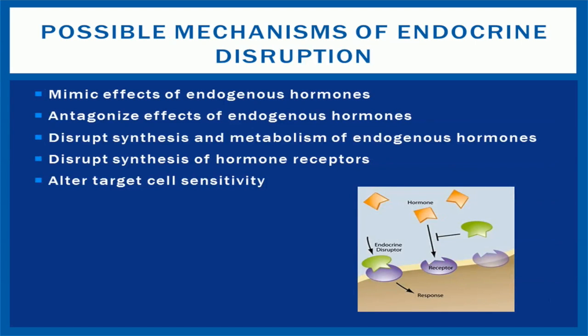So now that we know what EDCs are, how do these chemicals affect us? There are several possible mechanisms through which a chemical can disrupt the function of the endocrine system. The chemical may mimic the effect of hormones, antagonize the effect of hormones, disrupt the synthesis and metabolism of hormones, disrupt the synthesis of hormone receptors, or alter target cell sensitivity. For instance, an EDC which mimics the effect of a hormone may bind to a hormone receptor site, thus causing a response from the targeted cell without the presence of the corresponding hormone.